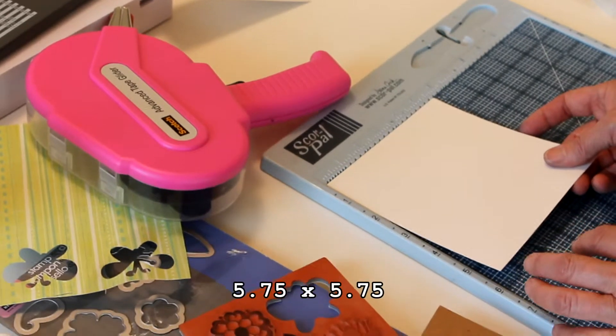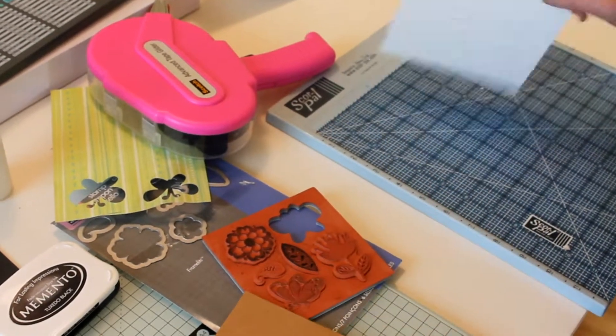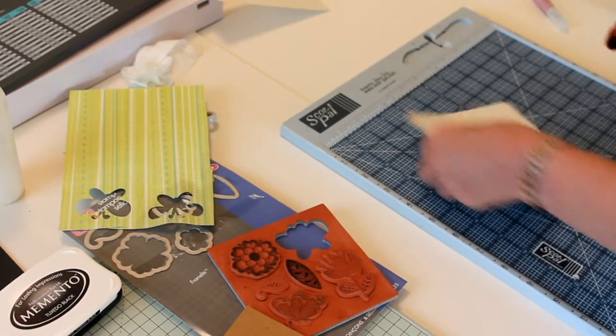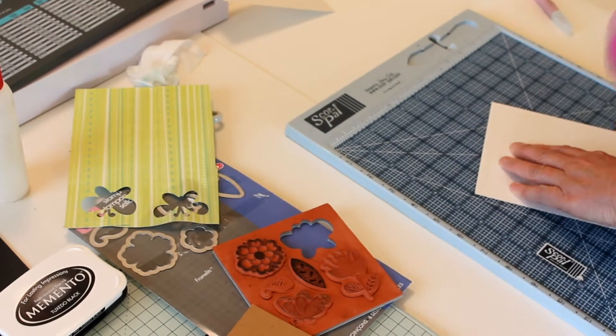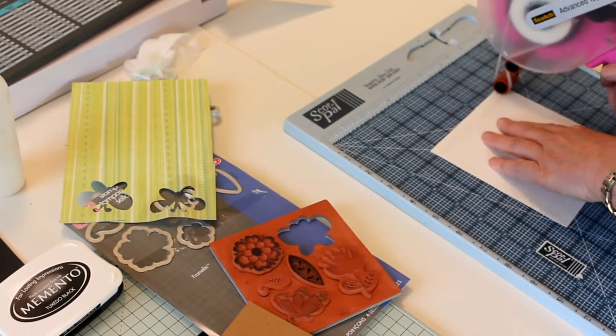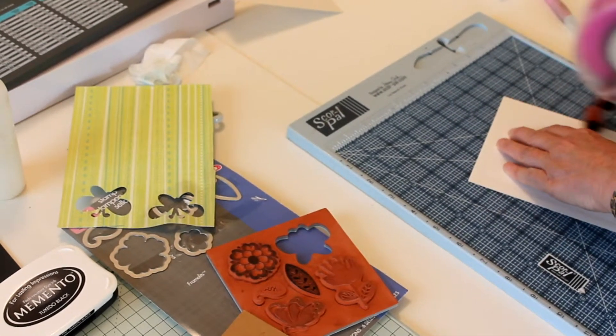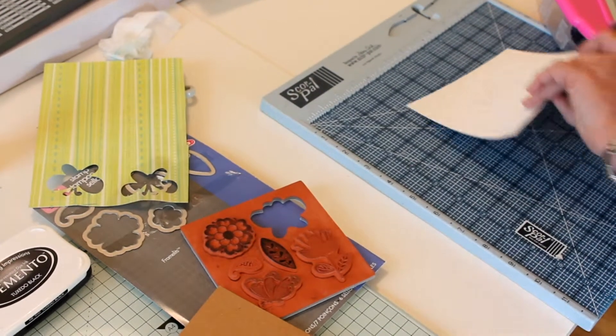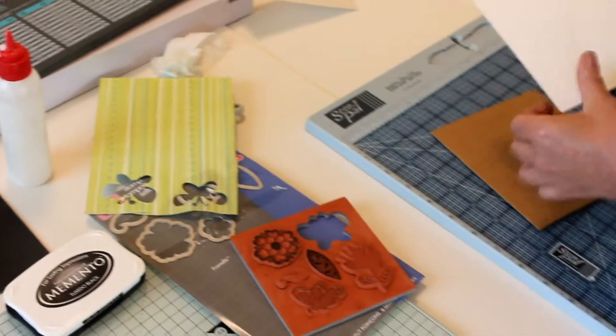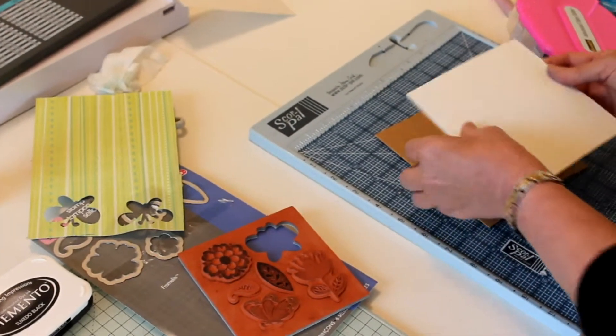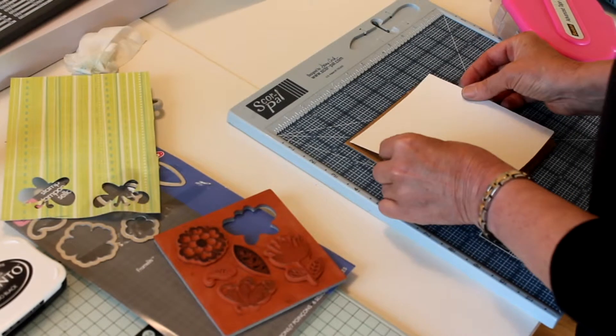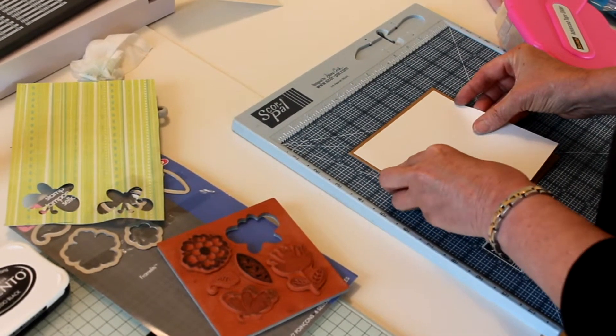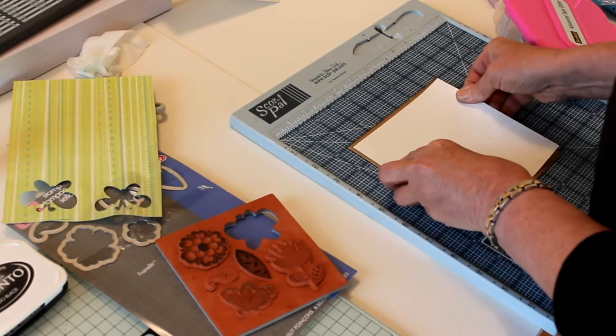I'm just going to stick that on so we have a little bit of the edge of the brown card showing through.